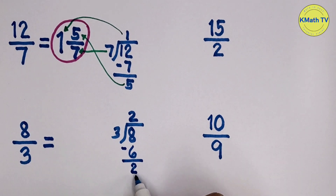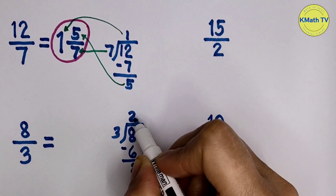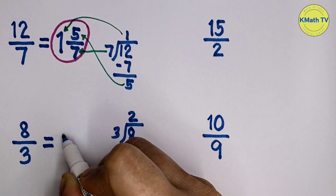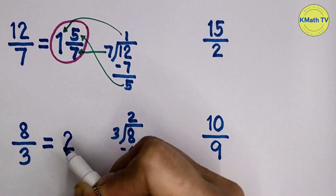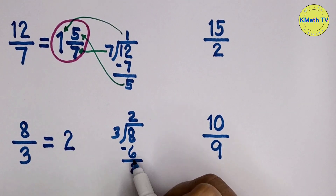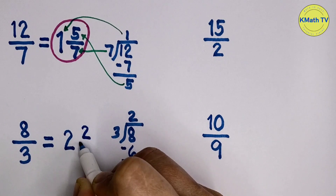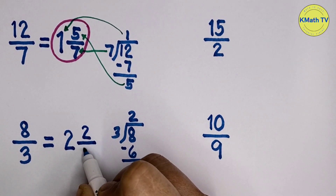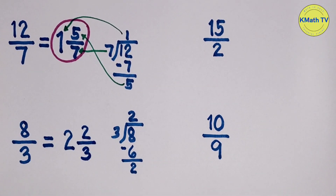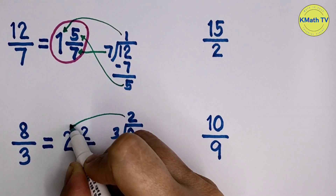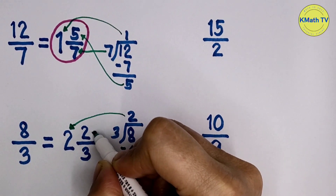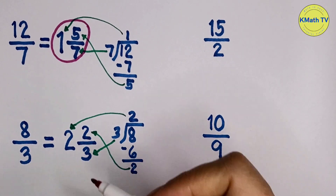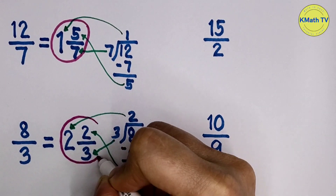The remainder is 2 and the quotient is 2. To write this as a mixed fraction, the quotient is the whole number, the remainder is the numerator, and the denominator is still 3. The improper fraction 8 thirds is 2 and 2 thirds as a mixed fraction.